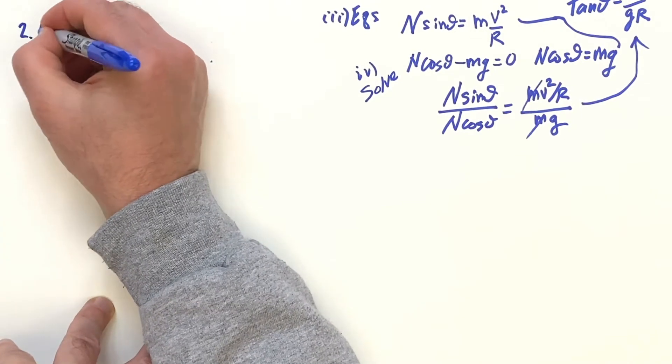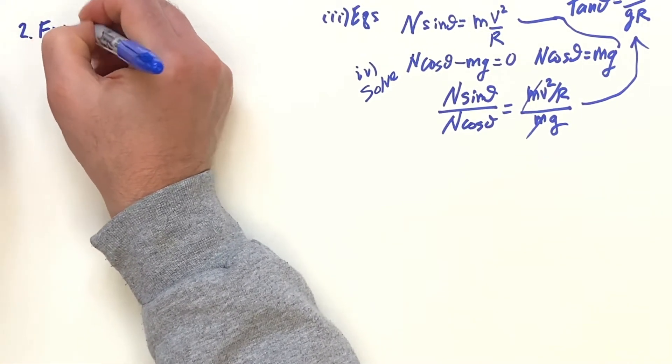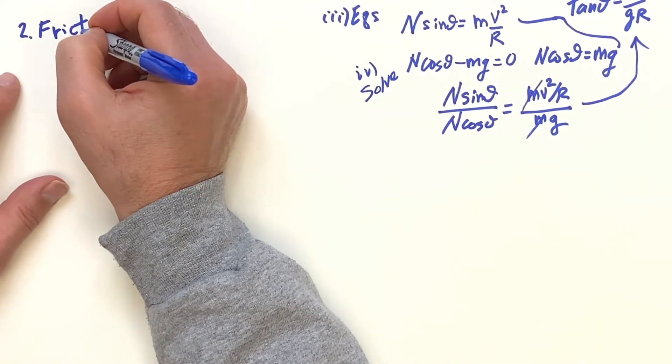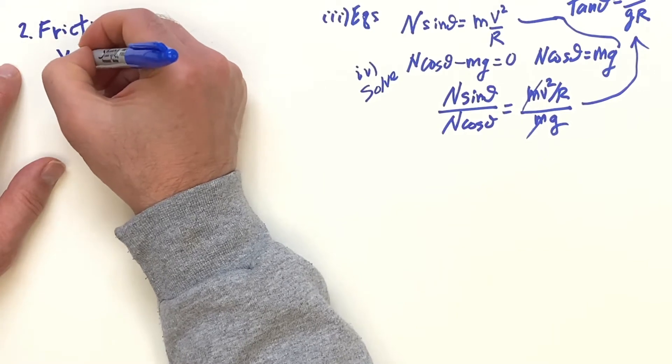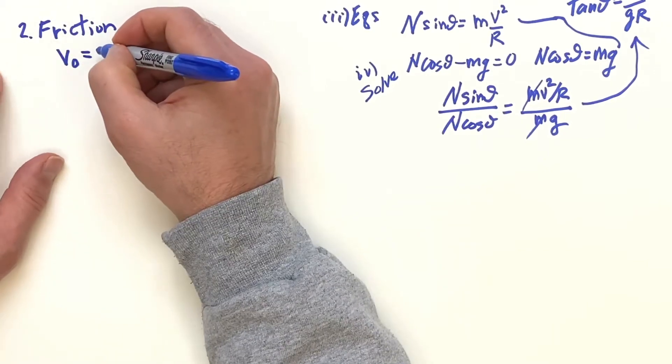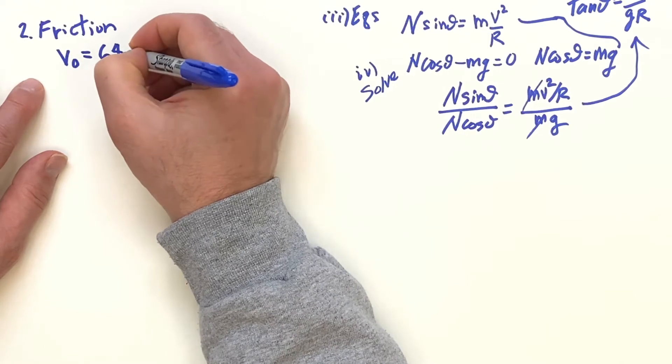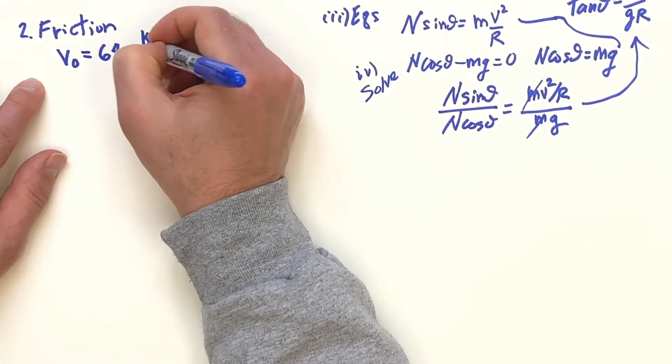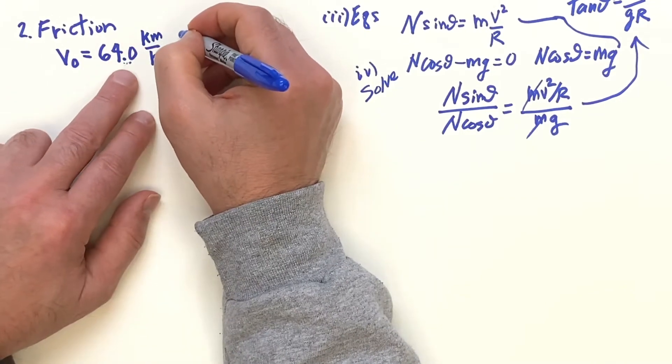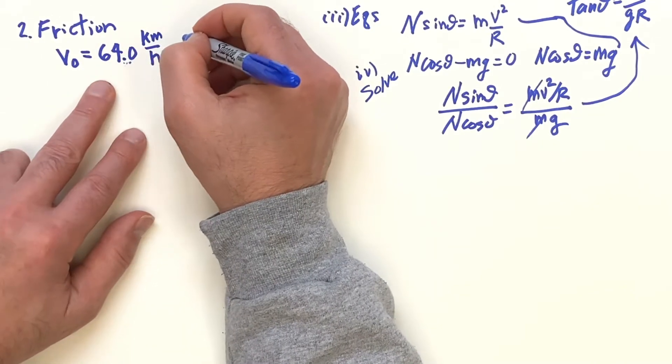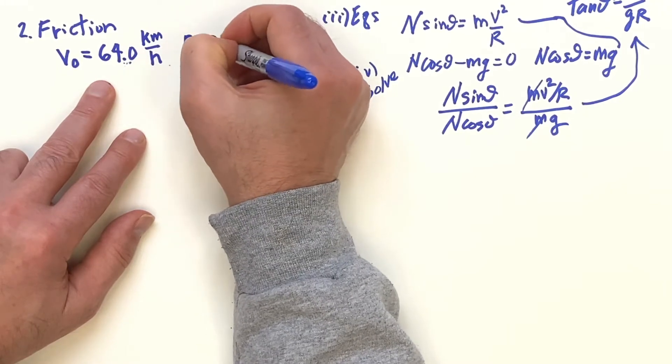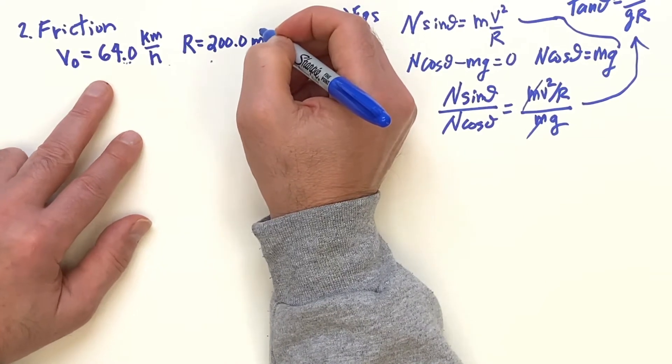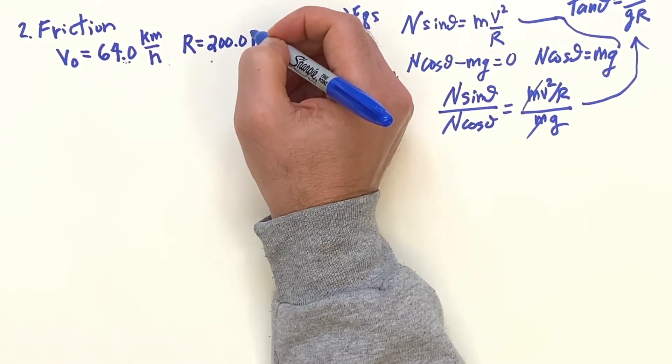Okay, so now we're going to do the case two where we have friction. And let's say the road is designed so that if there were no friction, you could take the curve at 64 kilometers per hour. And that's 40 miles an hour. And say the radius of curvature is 200 meters. It's about 660 feet.